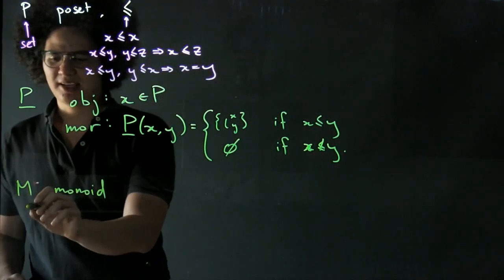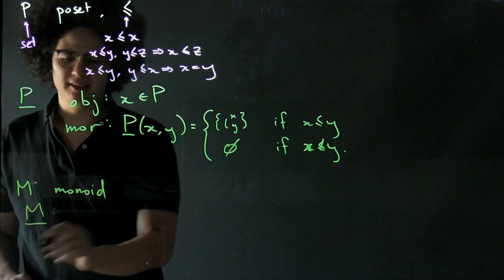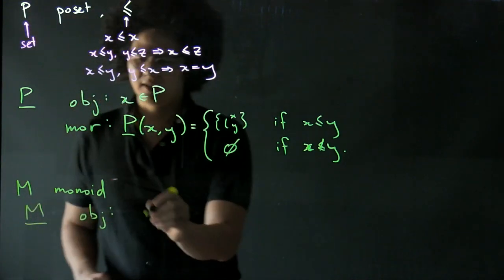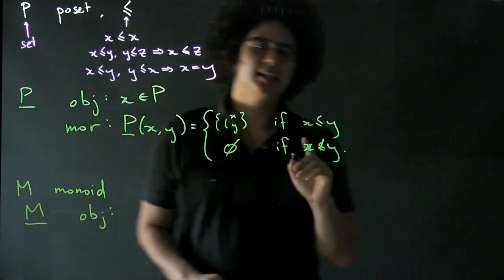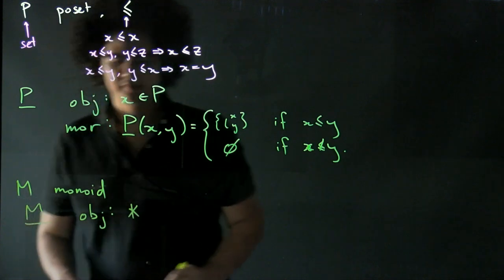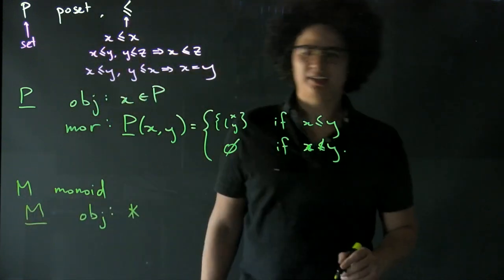So we're going to build our category. It's going to be called M underline. Its objects, well, it's going to be a category with a single object. So I'm just going to denote it like this. That's the only object in this category.